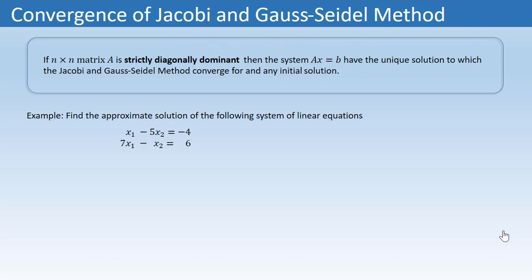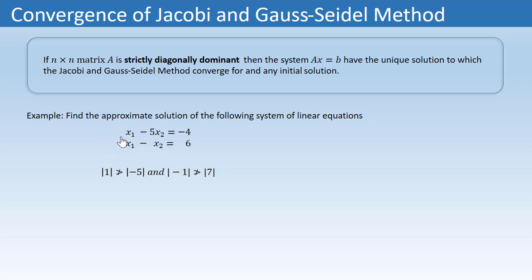Getting back to our original problem: we saw that the system does not have a convergent solution because the coefficient matrix is not strictly diagonally dominant. We can check: the absolute value of 1 is not greater than the absolute value of −5, and the absolute value of −1 is not greater than the absolute value of 7.